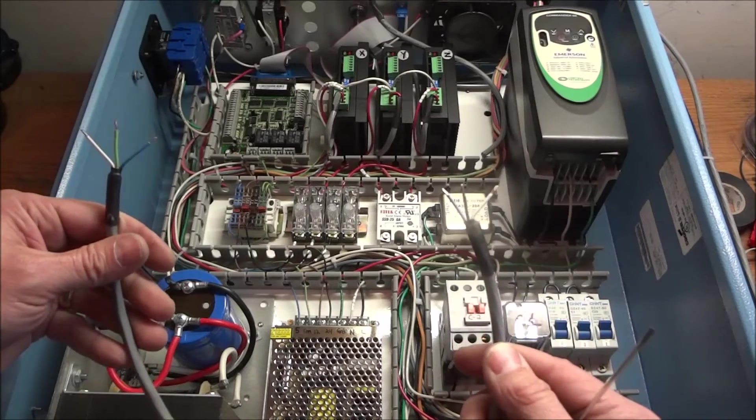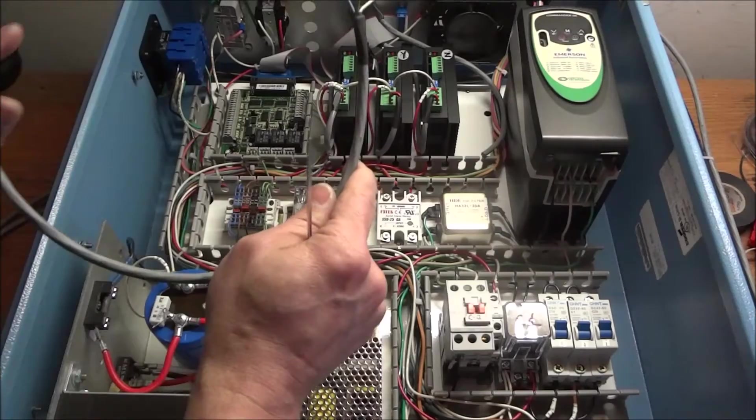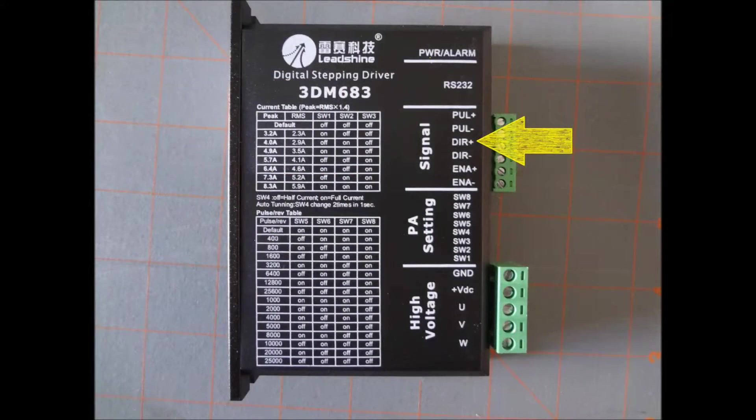So we're going to have three jumpers to our C11GS board. Now on our stepper motor drivers we have our pulse positive, pulse negative, direction positive and direction negative. And those are the four connections that we're going to be working with in this particular video.